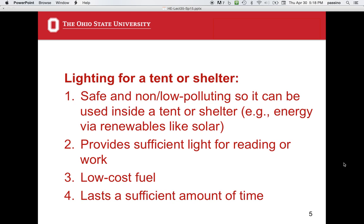Another need is lighting for a tent or shelter, which is similar to the developing world case for lighting. You want something safe and non-polluting that can be used inside the shelter — such as a solar lantern with a battery, a panel, and a bright LED as an option. You want it to provide sufficient light for reading or work, with low-cost fuel, lasting long enough for a given charge.